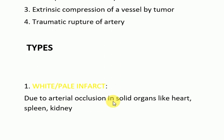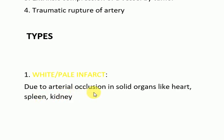Now let us discuss the types of infarct. An infarct may be white or pale, or red or hemorrhagic, depending upon the organ or the site of occlusion. White or pale infarcts occur due to arterial occlusion in solid organs like the heart, spleen, and kidney.